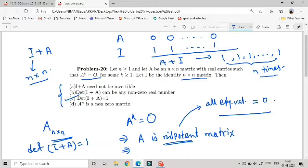Option B says the determinant of I+A can be any nonzero real number. This is false because it is exactly 1. Option A says it need not be invertible, but it is invertible. So both A and B are false.